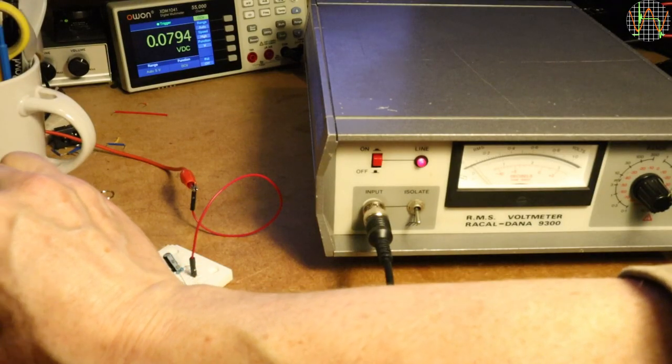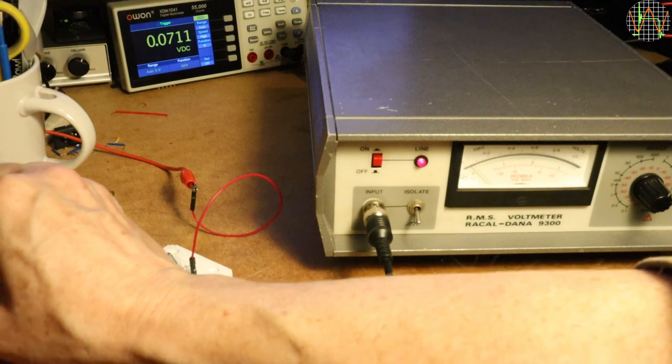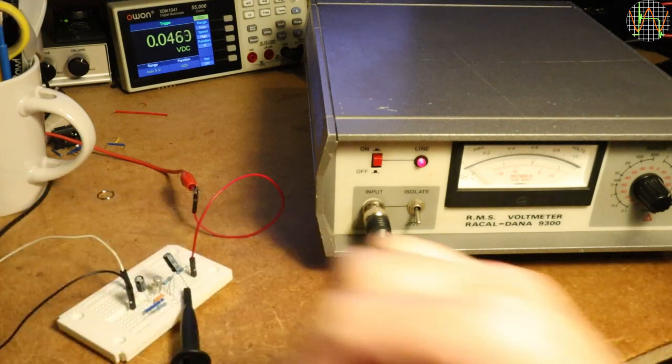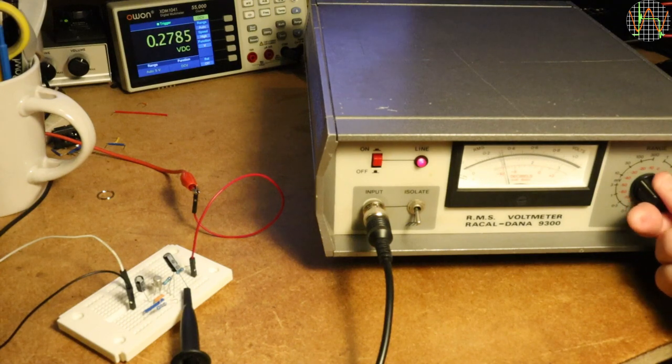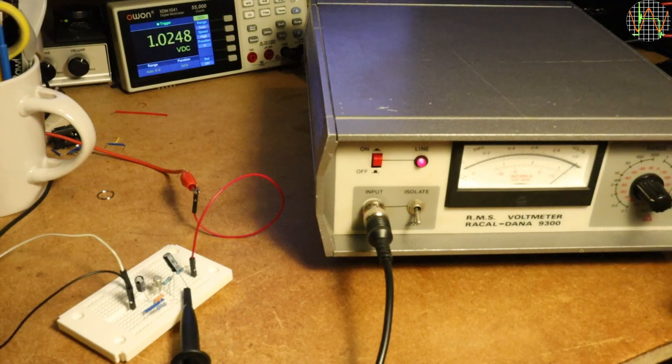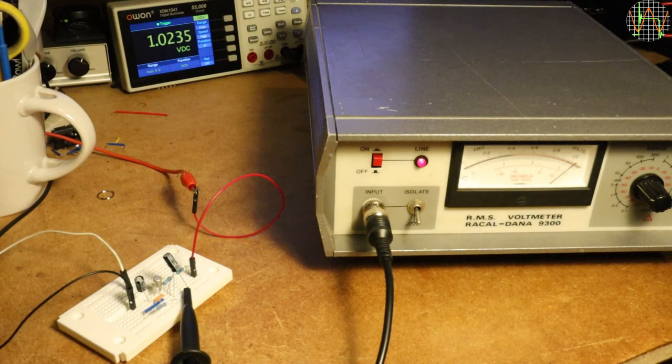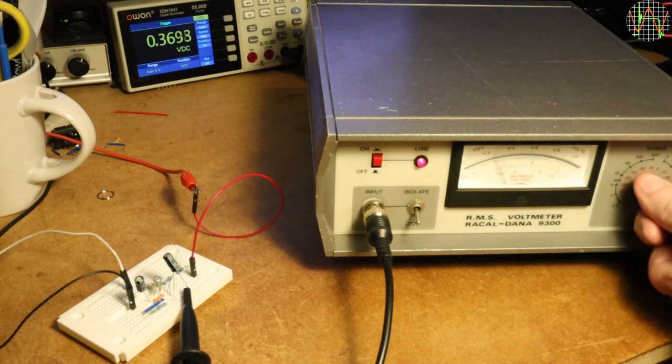First, let's measure the amplitude of the 1 kHz signal I feed into the amp. The OwOn meter at the back shows the 9300's DC output, lowering the range until we get a good reading which is pretty much exactly 10 mV RMS. This means the DC output needs to be multiplied by 10 to get 10.2 something mV.